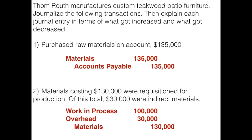So we're debiting work in process for the direct portion of these materials and debiting overhead for the indirect portion, and crediting materials for the total — because all of our materials are housed in our materials T-account.